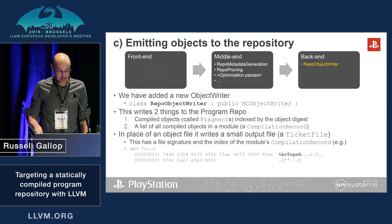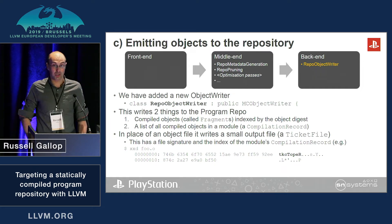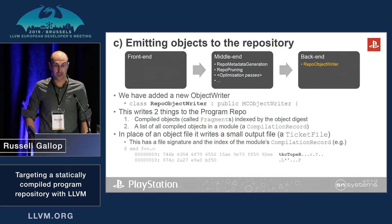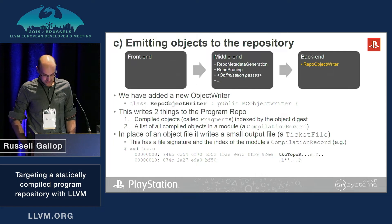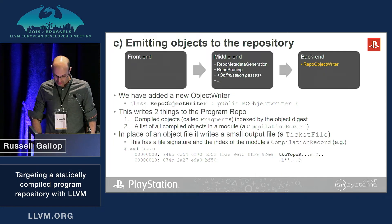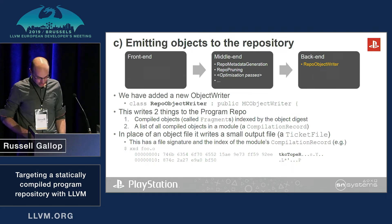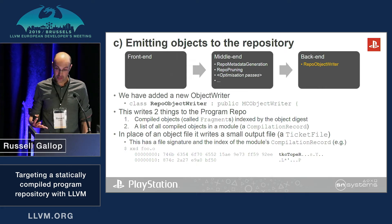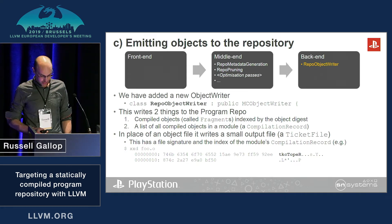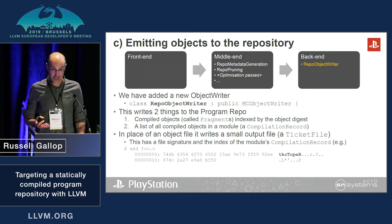Finally, we added a new object writer similar to the ELF object writer. This writes compiled objects to the program repo along with a list of all objects in a module. Instead of an object file, it writes a small output file with a file signature and index of the compilation record — there's an example shown here. A linker will then pick up a set of ticket files, retrieve all the required objects from the program repo, and proceed to link them without any duplicates.